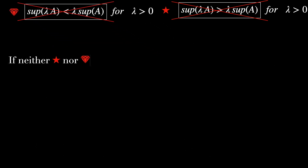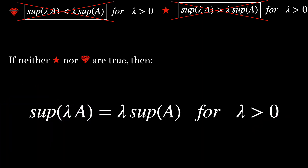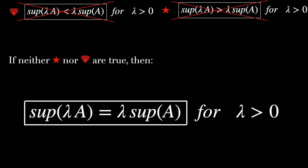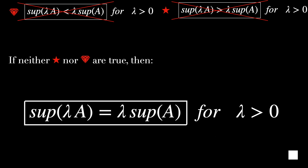Therefore, going back to our thesis statement, we conclude it is certainly wrong. If neither the star nor the diamond inequalities are true, then there is just one option left: the supremum of lambda A equals lambda times the supremum of A, for lambda greater than 0. And that's the end of the proof.